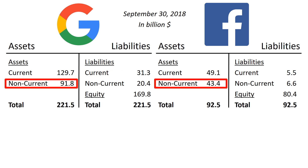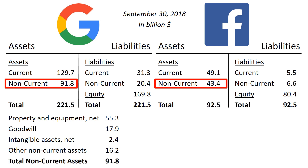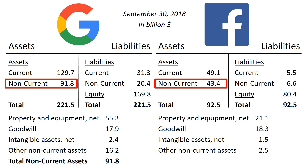Bottom left of the balance sheet: non-current assets. For Alphabet Inc: Property & Equipment $55.3 billion, Goodwill $17.9 billion, Intangible Assets $2.4 billion, Other Non-Current Assets $16.2 billion, Total Non-Current Assets $91.8 billion. For Facebook: Property & Equipment $21.1 billion, Goodwill $18.3 billion, Intangible Assets $1.5 billion, Other Non-Current Assets $2.5 billion, Total Non-Current Assets $43.4 billion.